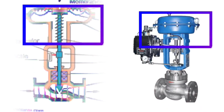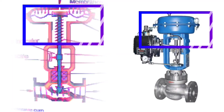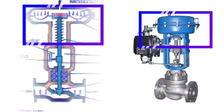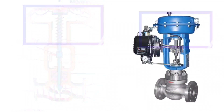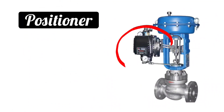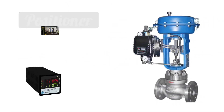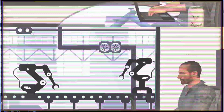Actuator is the mechanism that makes the valve body move and regulates the flow of fluid. Positioner is the device that receives the signal from the control loop.